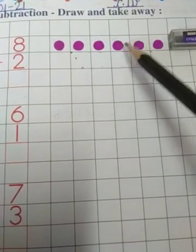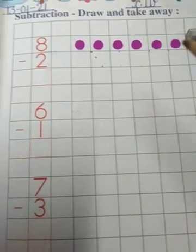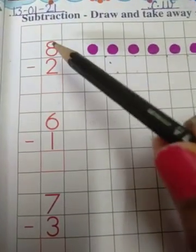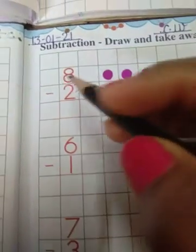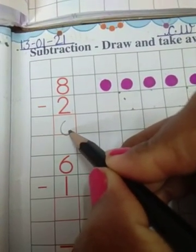1, 2, 3, 4, 5, 6. 6 balls are left. It means whenever we subtract 2 from 8, we get 6. Okay.